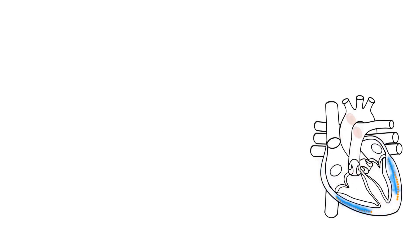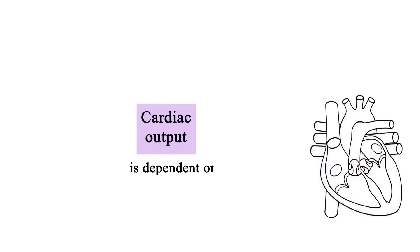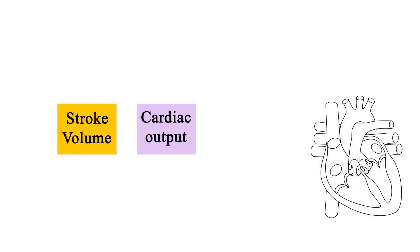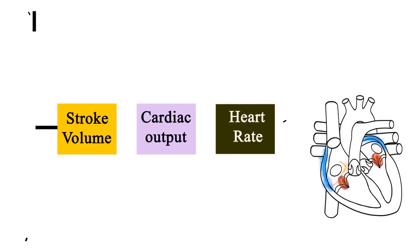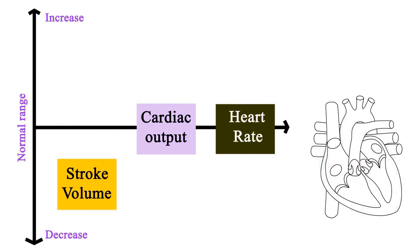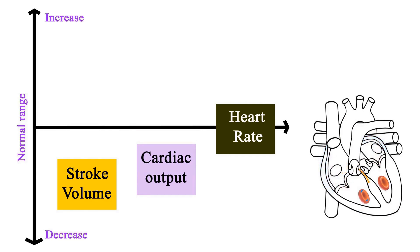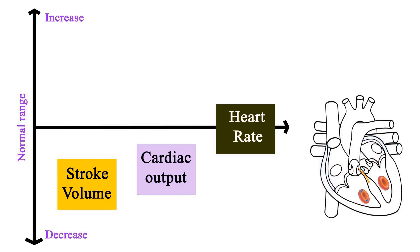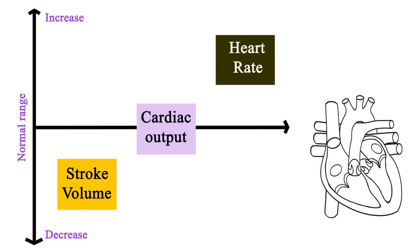Remember that cardiac output is dependent on the amount of circulating blood per minute. To meet this demand for blood flow, both stroke volume and heart rate contribute to ensuring cardiac output. If stroke volume is decreased, the amount of blood ejected from the heart per beat is decreased. In order to maintain cardiac output, more beats will be needed in one minute to circulate the same amount of blood.